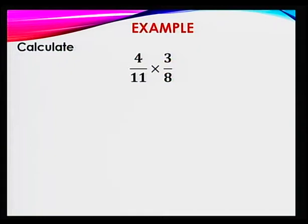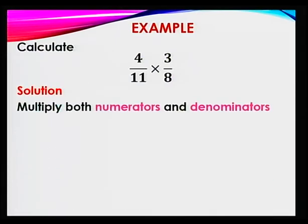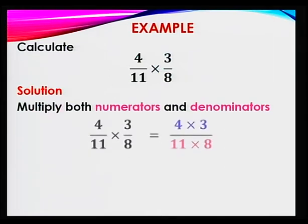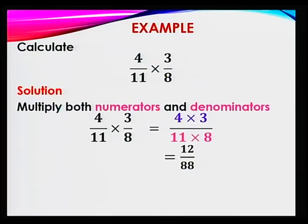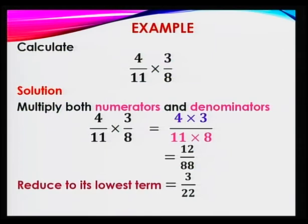Let's take another one: 4 over 11 times 3 over 8. You multiply the numerators and multiply the denominators. That will be 4 times 3 over 11 times 8. 4 times 3 is 12, and 11 times 8 is 88. Don't forget, always reduce to its lowest term. That will be 3 over 22, which is the answer.